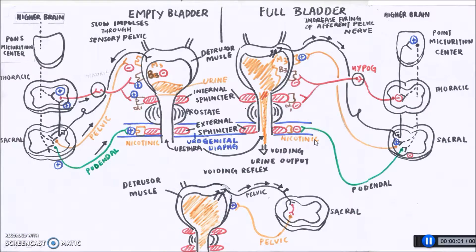Now we will talk about the micturition reflex and also the voiding reflex. Here we can see there is an empty bladder with low volumes of urine. There are stretch receptors on the detrusor muscles. The stretch receptors will send slow impulses through the sensory pelvic nerve to the sacral region of the spinal cord, and then send impulses to the thoracic lumbar region, which will activate the hypogastric nerve, and in turn activate the beta-3 receptors on the detrusor muscles, causing relaxation — which helps us hold urine.